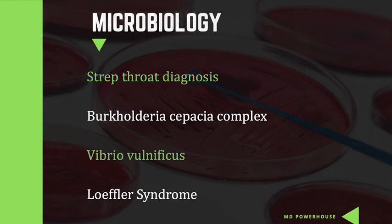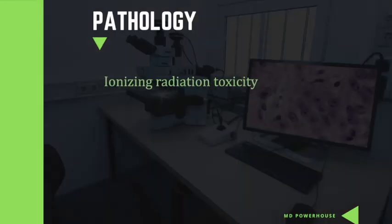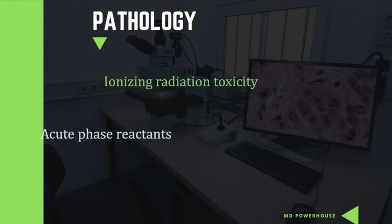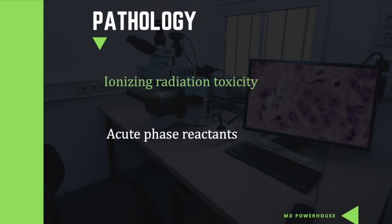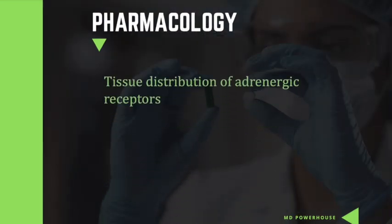In pathology, the updates include Ionizing Radiation Toxicity and Acute Phase Reactants. More specifically, Haptoglobin and Procalcitonin were added. In pharmacology, the update covers Tissue Distribution of Adrenergic Receptors.